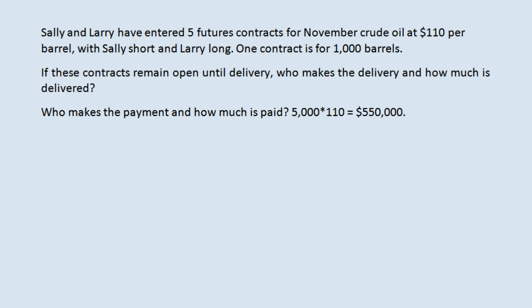Keep in mind that in the real world, futures contracts do not very often come to the point where delivery of the product is actually made. For example, Sally and Larry might close out their positions by taking the opposite position. Or if they do leave these positions open, instead of physically delivering the oil and making the full payment, there will just be a smaller payment based on the difference between the agreed upon price of $110 and the actual price of oil in November.